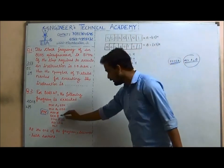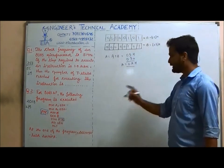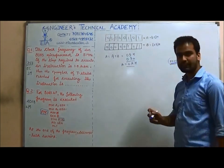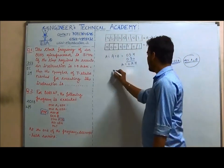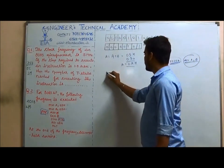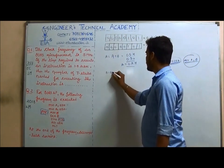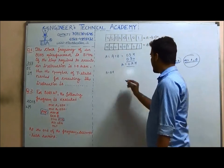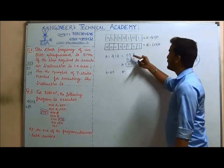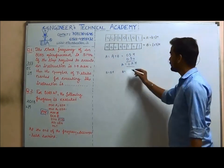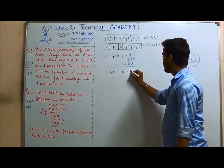The fourth step is DCR B. DCR B means decrease the value of B by 1. So B = B − 1. B was 05H, so now B becomes 04H.